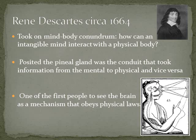Now we're back at René Descartes, around 1664. He took on the mind-body conundrum — specifically, how can an intangible mind, a consciousness, interact with the physical body? He believed that the pineal gland was the conduit that took information from the mental to the physical and vice versa. He was one of the first people to see the brain as a mechanism that obeys physical laws. This drawing shows stimuli hitting the eyes, going into an oversized pineal gland, and being interpreted into muscle movement.